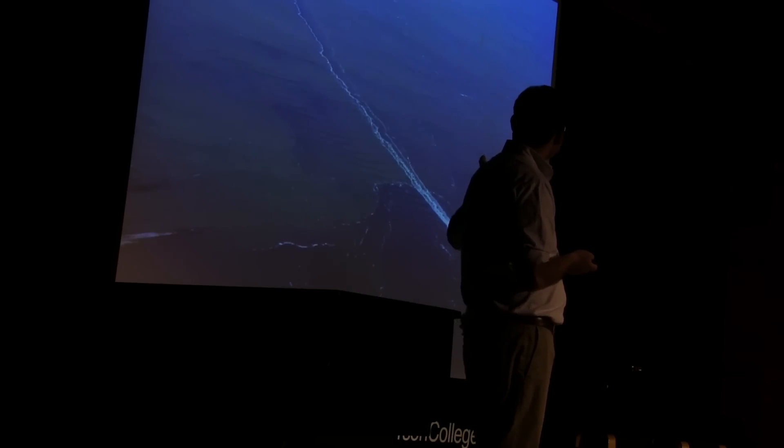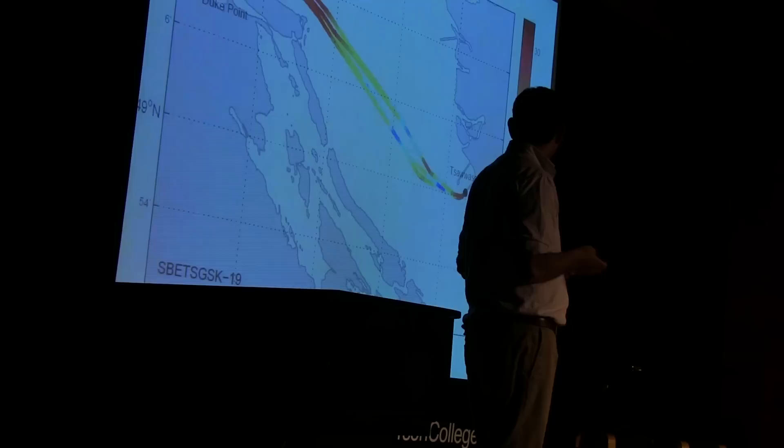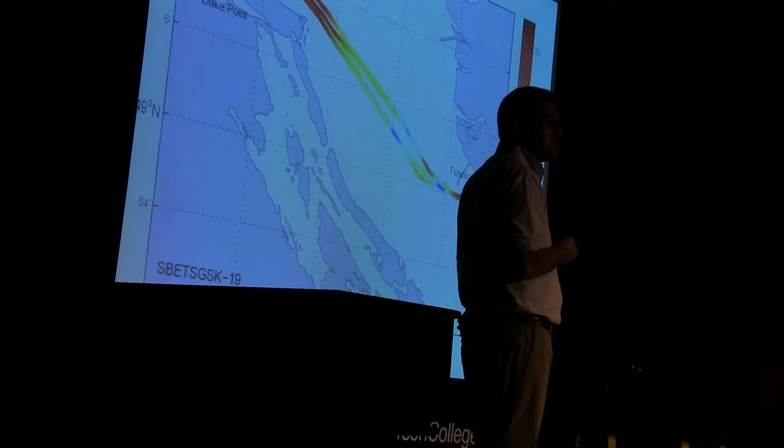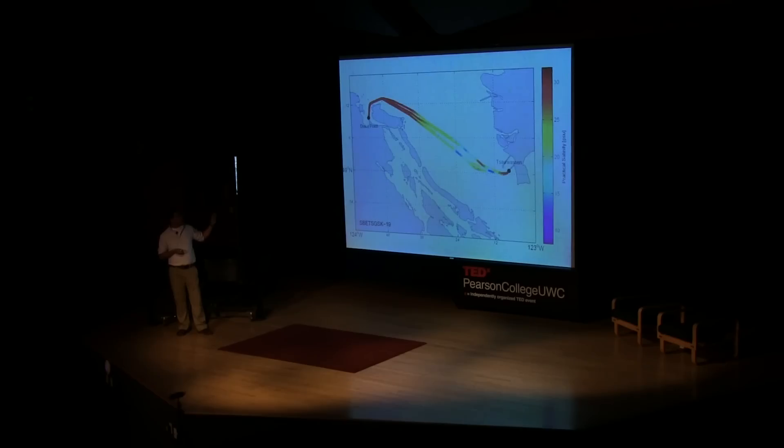And so here you can see this ferry making a nice track through the Fraser River plume. And you can tell it's going through the plume because you can see this discolored water, which is all the silt that the river is bringing out. And we can look at the same picture in the context of what the instruments are measuring. And here's a picture of the ferry route from Duke Point on the island to Vancouver. And as the ferry crosses, it goes through really saline water, which is the red color, and into the Fraser River plume. And you can see the lighter colors there.